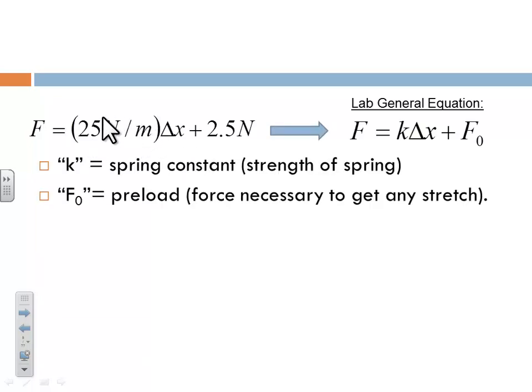We said the slope represents the strength of the spring. And in physics, we call that the spring constant, and we use a lowercase k to represent that. And so in place of the slope in our equation, our general equation will just have a k. That stands for spring strength or spring constant.